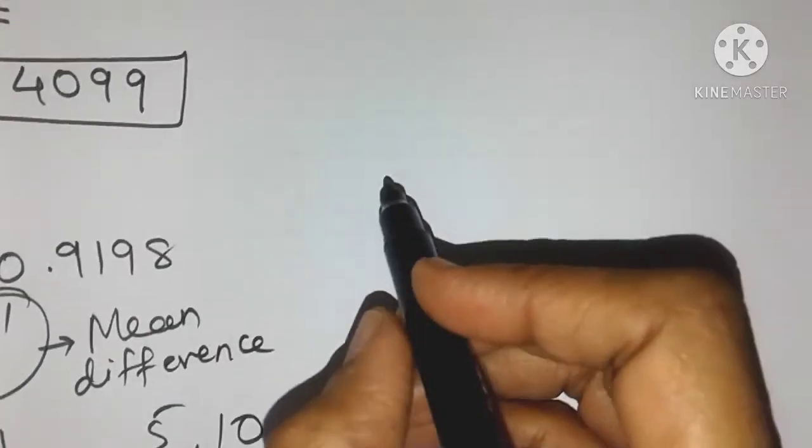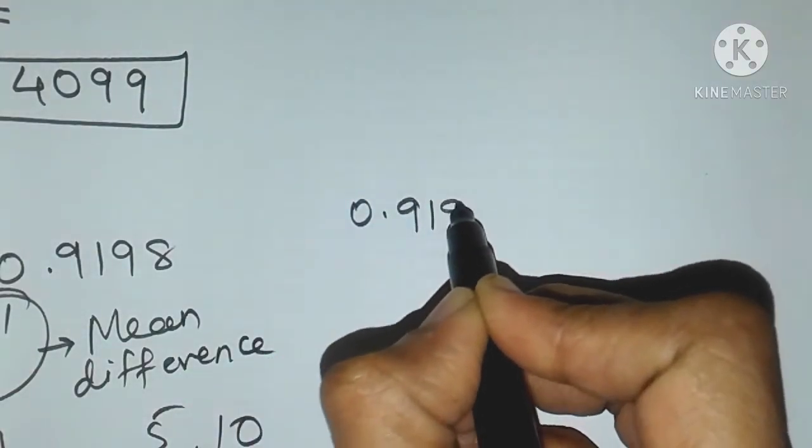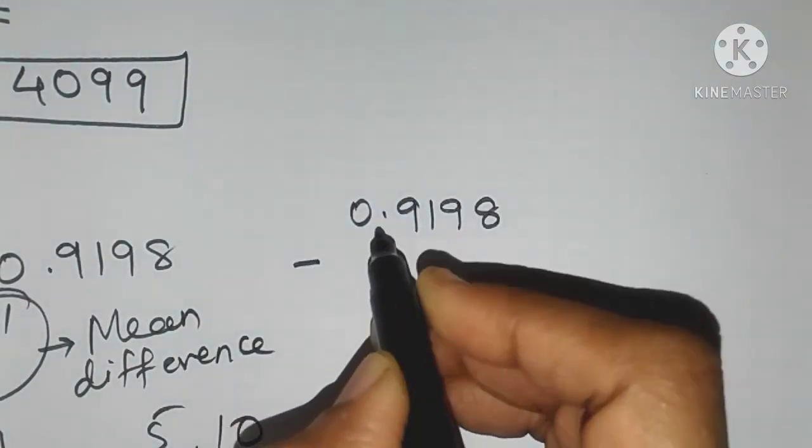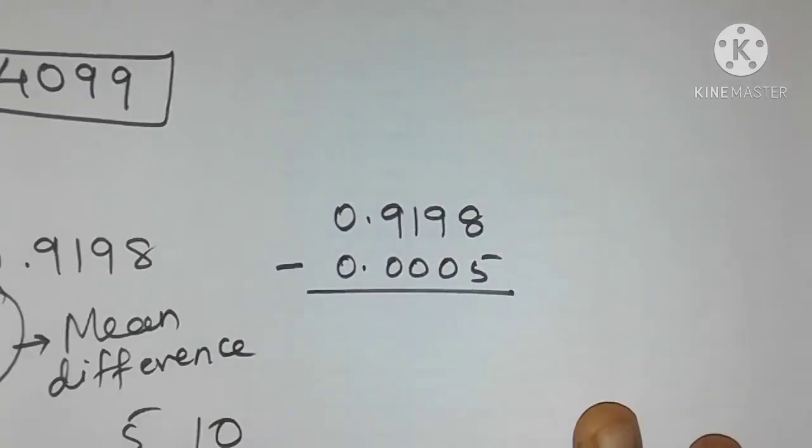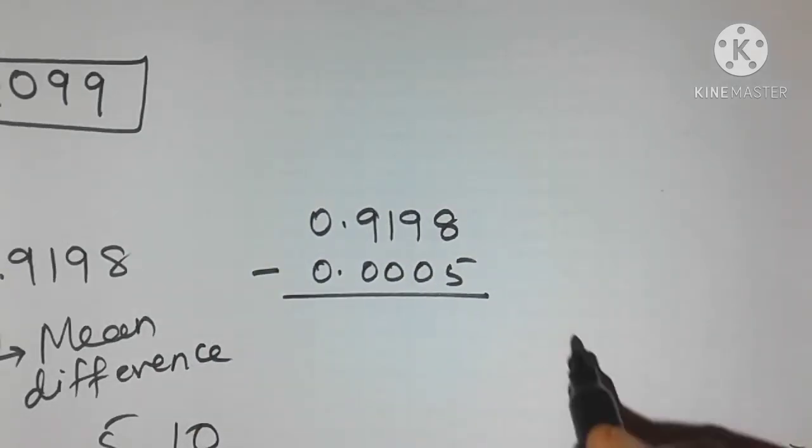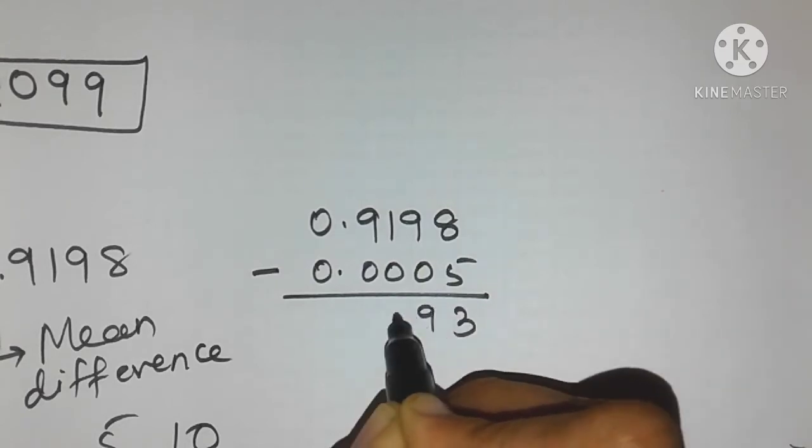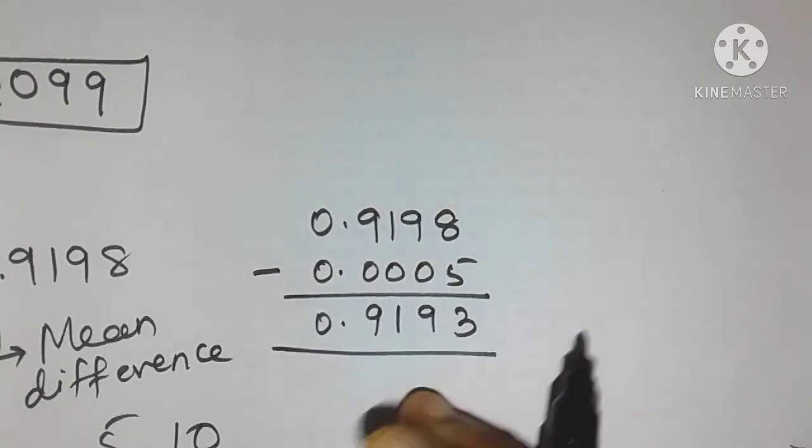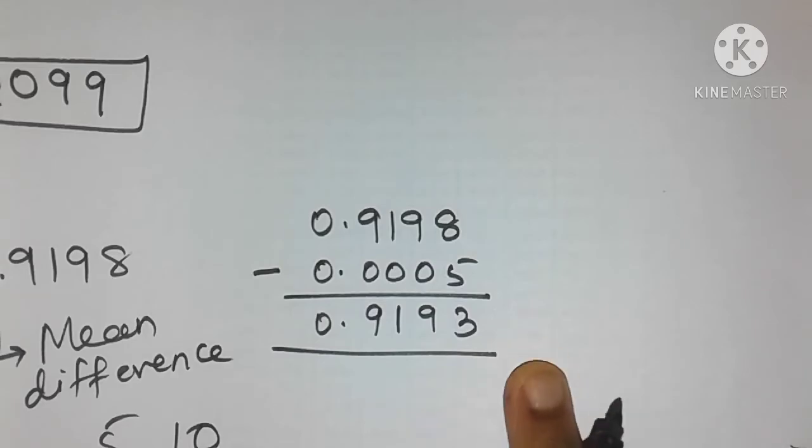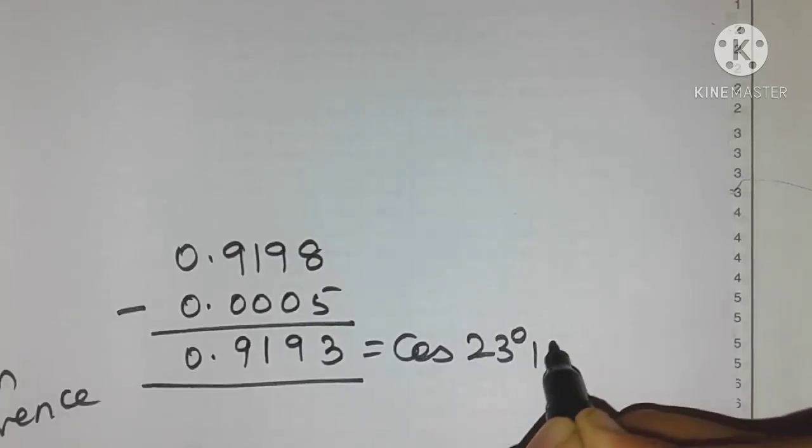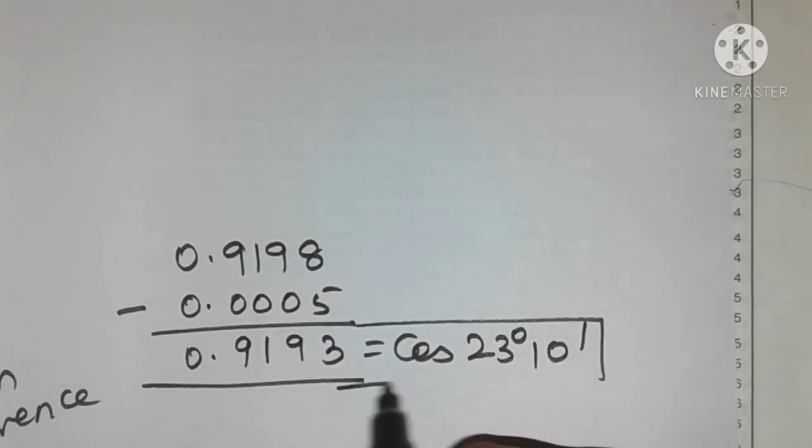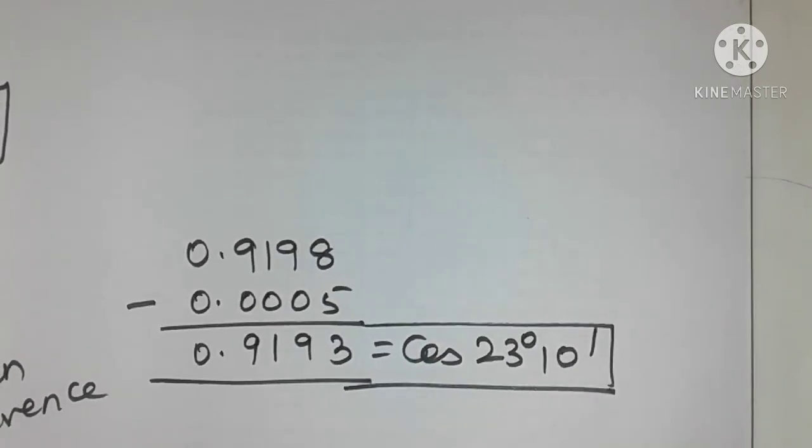And in this respect cos function is very different from sin and tan function. There you have to add the mean difference whereas here you should never add, you should only subtract. So this is the value 0.9193. This is nothing but cos of 23 degrees and 10 minutes. So I hope you understood friends how to find the cosine of any angle from 0 to 90 degrees using the natural cos table.